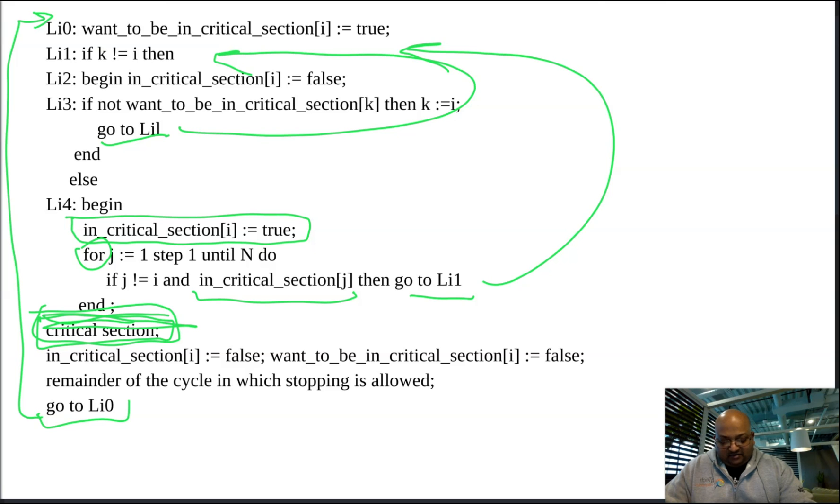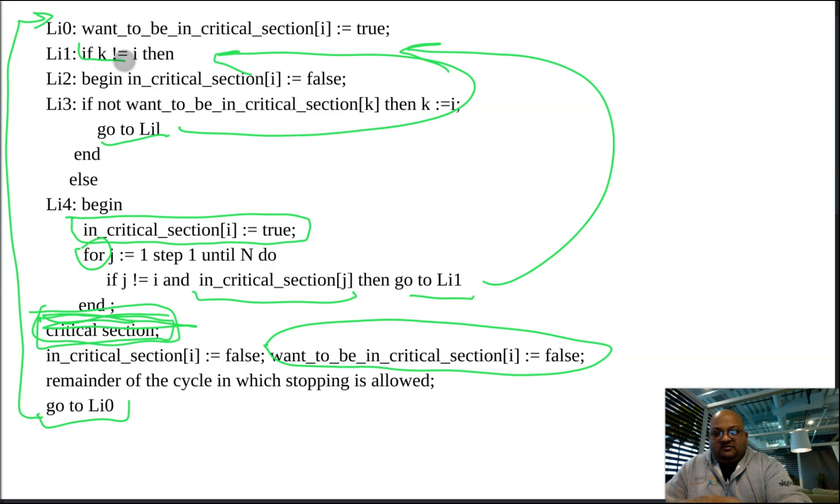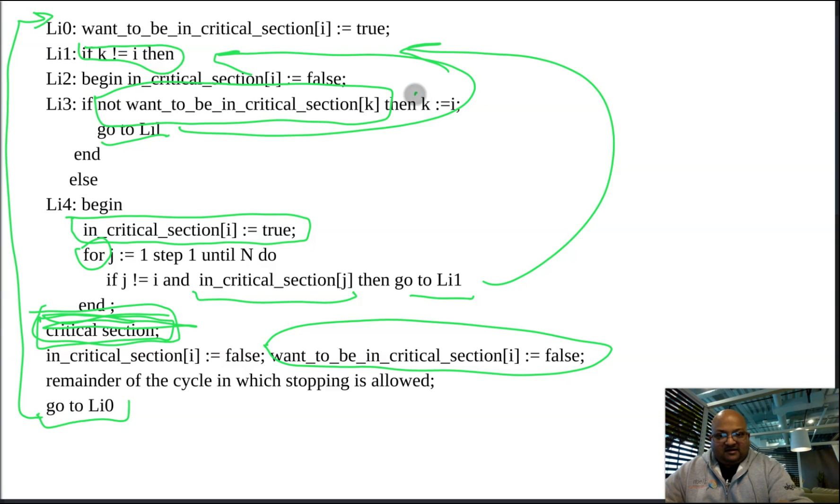If the kth computer is not among the looping ones, so b of k, so b was want to be in critical section, will be false, right? So we set that to false over here. All the ones that are looping will find k not equal to i. And because of that, one of them will satisfy this condition, and it will then assign k to be i.